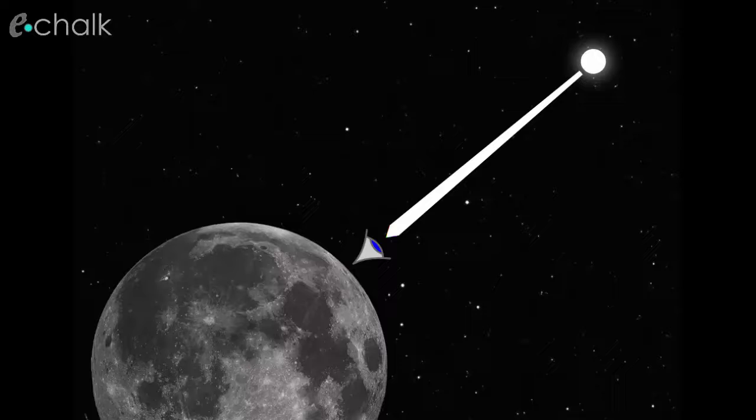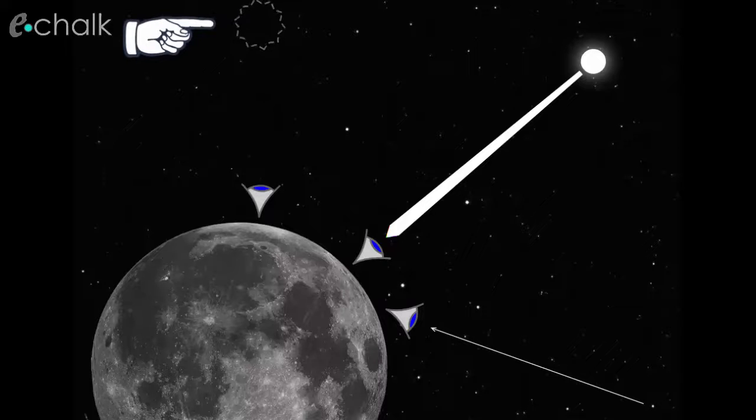Now consider a second observer looking towards this star here. There's nothing to obstruct light travelling all the way from the star to the observer. So he sees it, even though the sun is shining brightly in the heavens. And of course, an empty patch of space like this emits no light at all. So an observer looking here just sees the blackness of space.